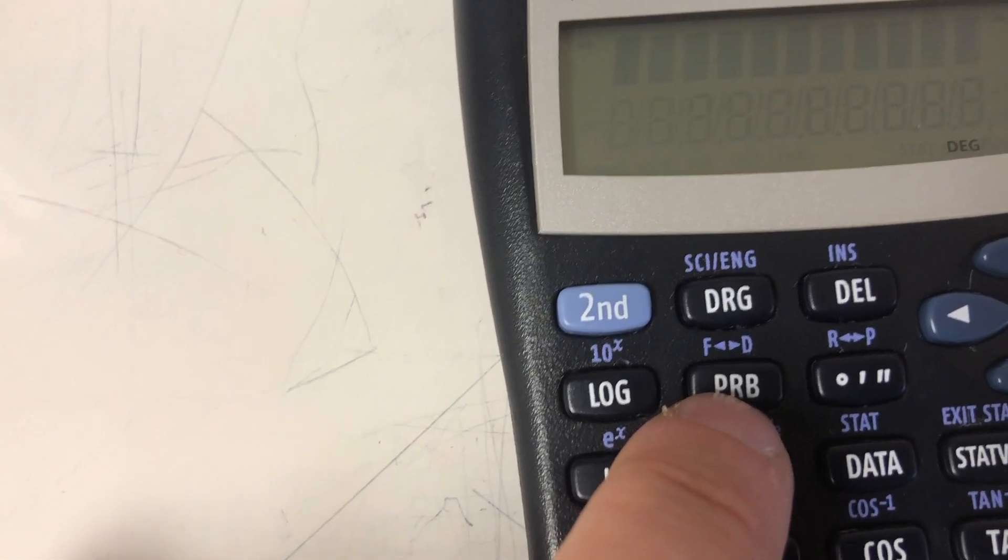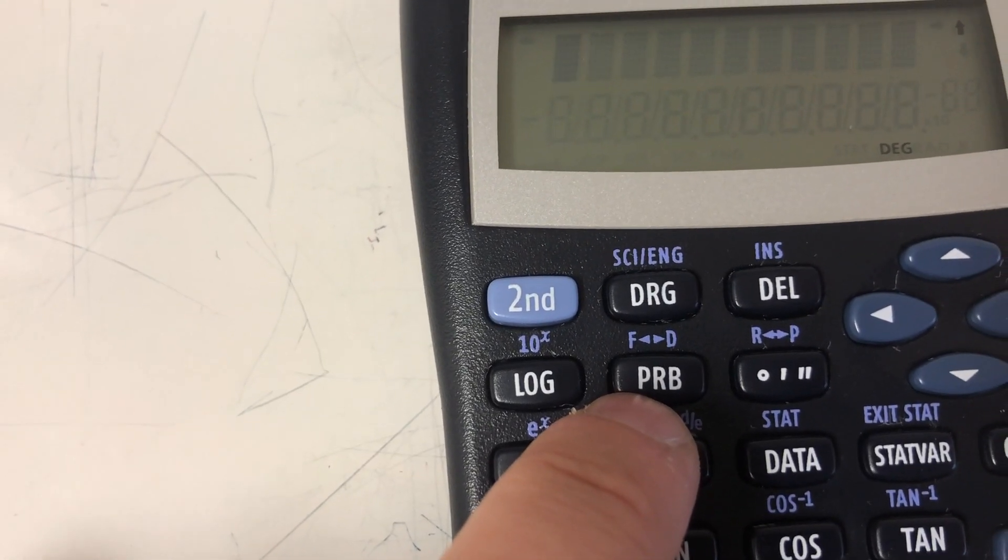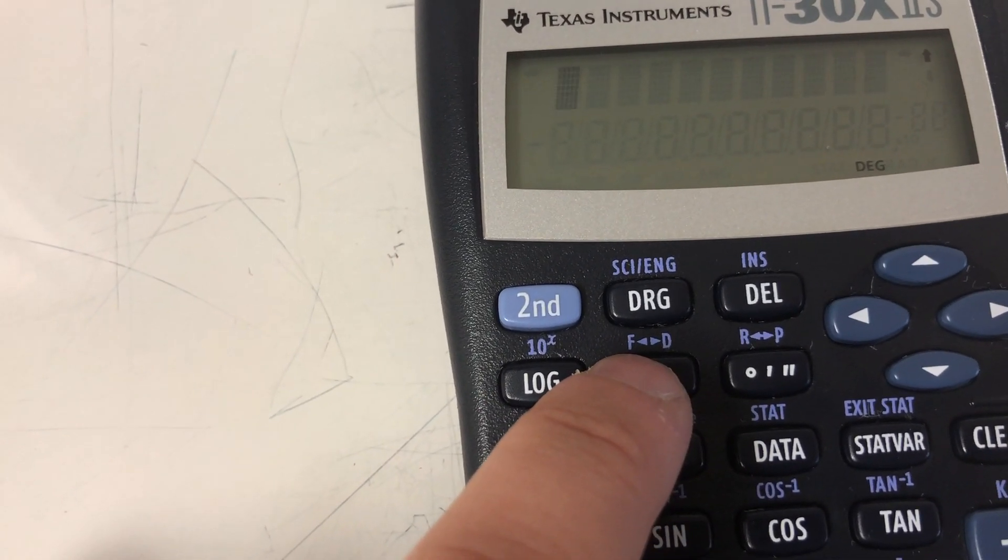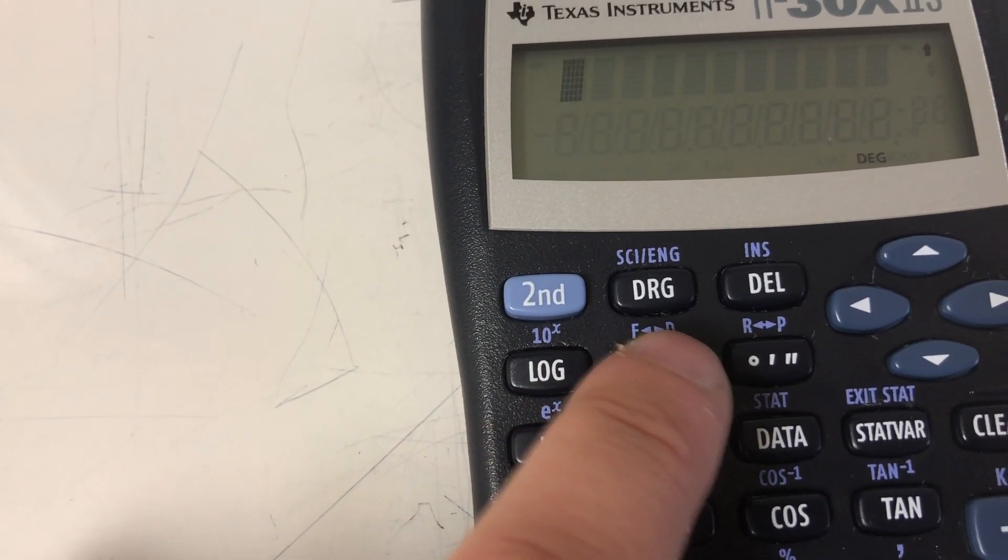So right above this PRB on this calculator, you'll see in purple it says F to D, meaning we can convert back and forth between fractions and decimals.